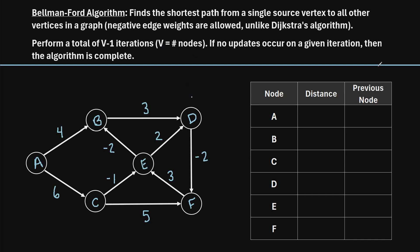So let's jump right into an example. Let's say we have this graph down here, and we can see that there are a total of six nodes. In other words, v is equal to six. So the most number of iterations we would have to do to complete the Bellman-Ford algorithm would be six minus one, which is five. For this particular graph, we're going to assume that node A is our source node, and we want to find the shortest path from node A to every other node in the graph.